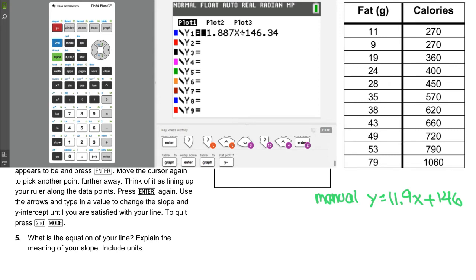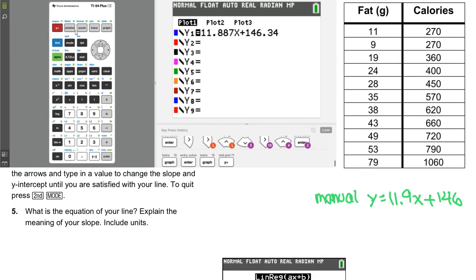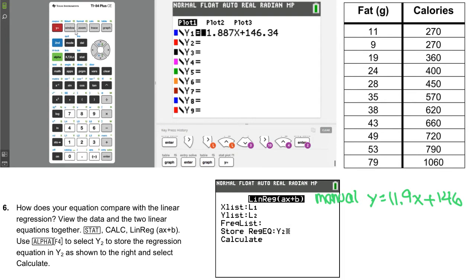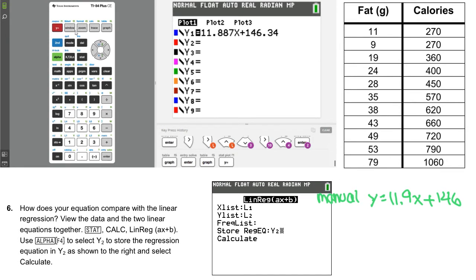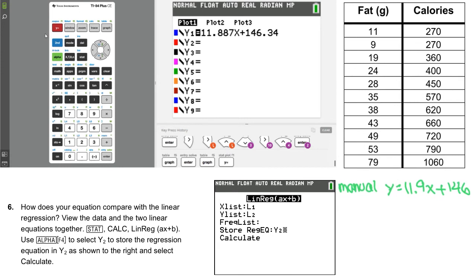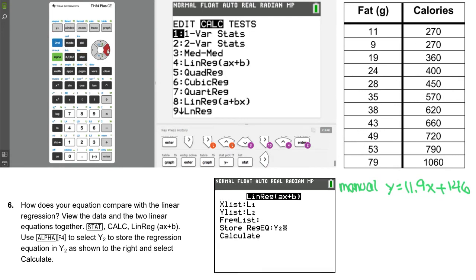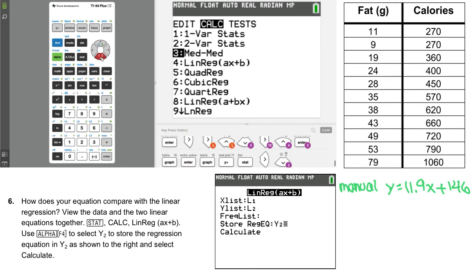We could say, well, what if the grams was something crazy like 120? What would be the calories? Like a triple cheeseburger. And, we could regress. But, now let's do the linear regression. So, number six. How does your equation compare with the linear regression? So, we'll view the data in two linear equations together. So, stat again. And, go over to calc. Now, this time we'll choose option four. So, it's kind of letting the calculator do it itself. You know, picking the best.